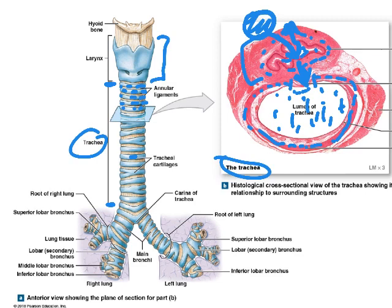One more part of the trachea to know is the carina — the branching point right at the inverted V where the trachea splits into the right and left main stem bronchi. That's the end of the trachea.